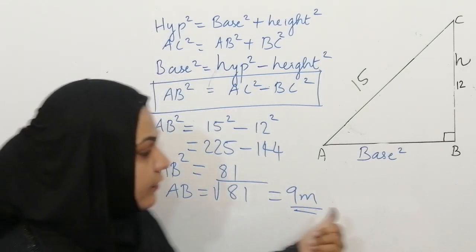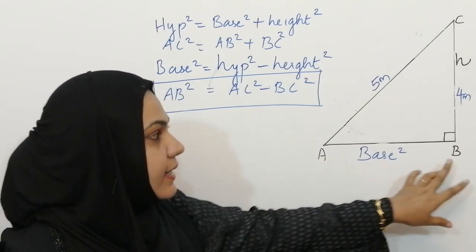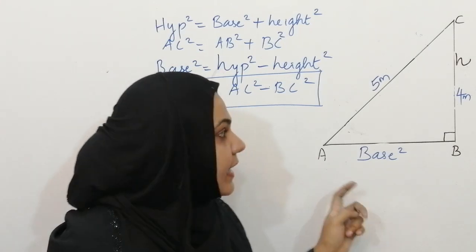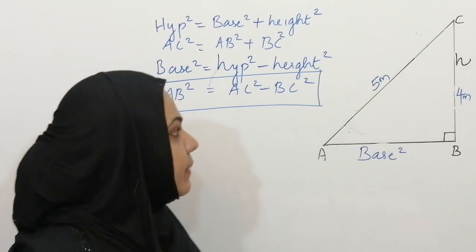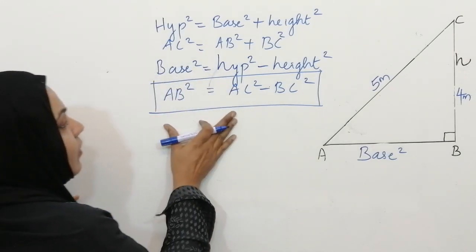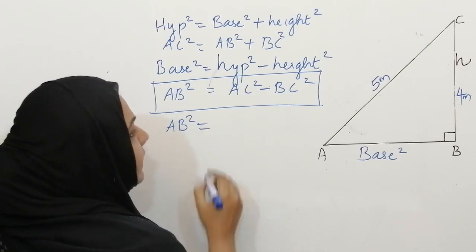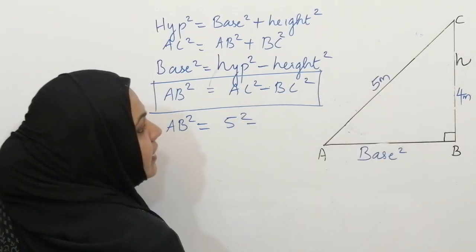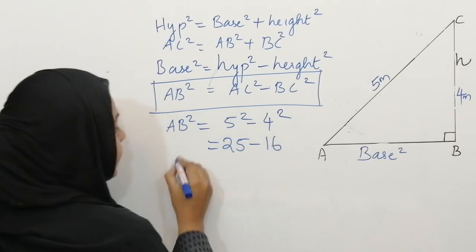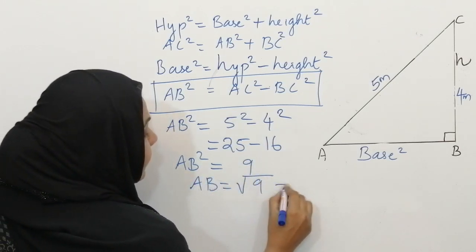Now we can do one more question related with base. This is our second question for finding base square. Triangle ABC, right angle at B. AC is 5 meters and BC is 4 meters. We have to find AB. AB square is equal to AC square minus BC square, that is 5 square minus 4 square, which is 25 minus 16, that is 9. So AB is equal to square root of 9, that is 3 meters.